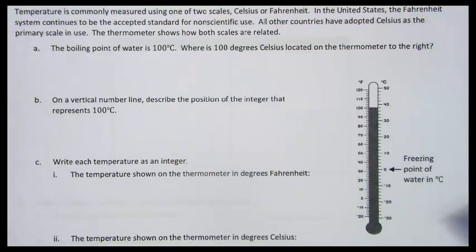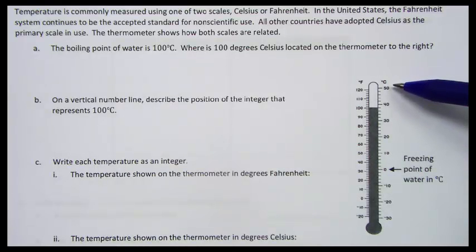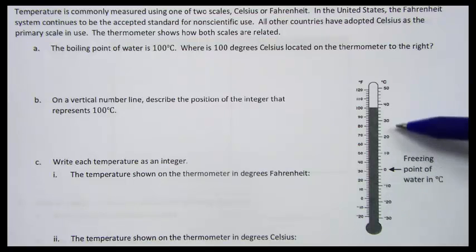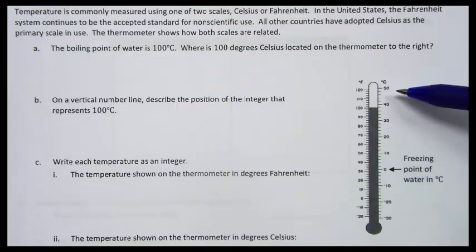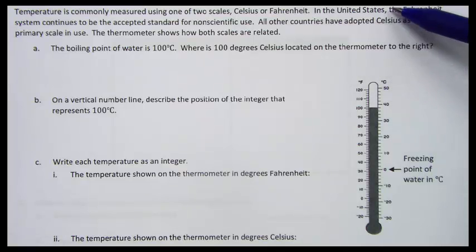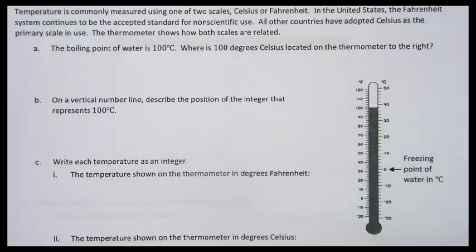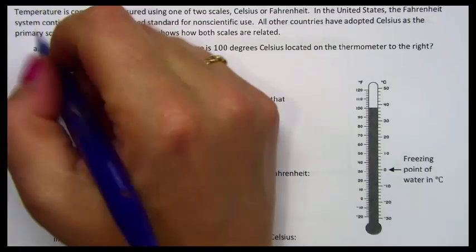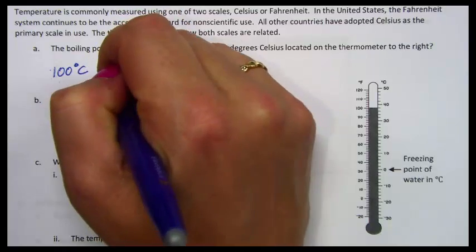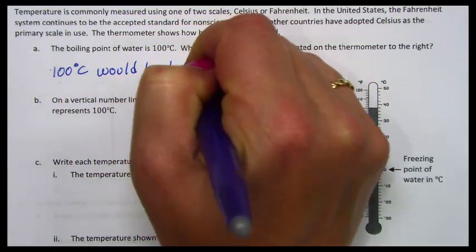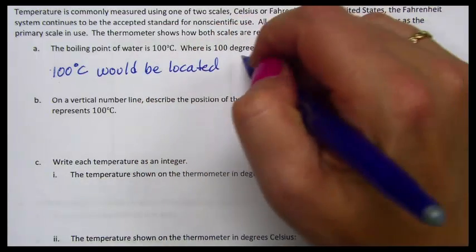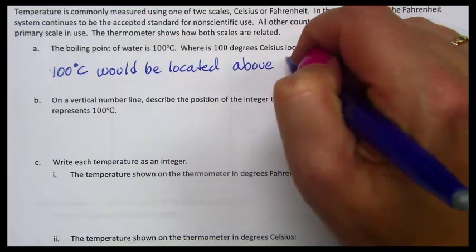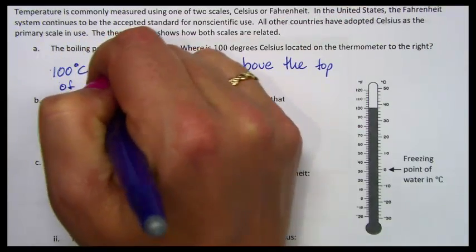If we look to find the boiling point of water, which is 100 degrees Celsius on the scale, we would look at the Celsius side. And if we look for 100 on the Celsius side, we can see it's not on this thermometer. So where would it be located? Here's 50. 100 would be way up here if we continued our scale. So it would be located, 100 degrees Celsius would be